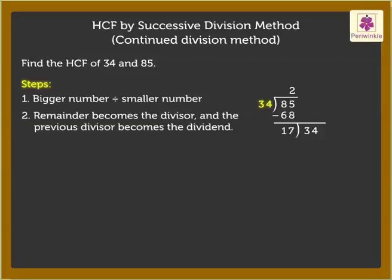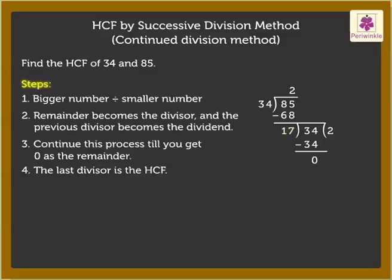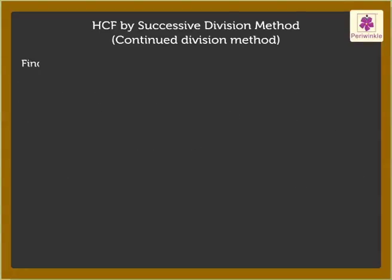Thus, here 17 becomes the divisor and the previous divisor, that is 34, becomes the dividend. Step 3: Continue this process till you get 0 as the remainder. Here, 17 × 2 = 34, and 34 − 34 gives 0 as the remainder. Step 4: The last divisor is the H.C.F. Here, the last divisor is 17. Therefore, H.C.F. of 34 and 85 is 17.